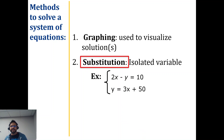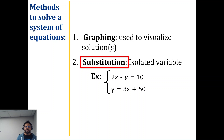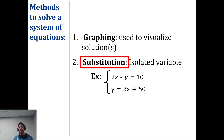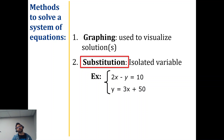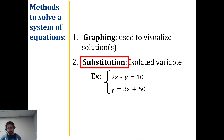Looking at this as an example — we're not going to solve it, just look at it quickly. If you notice, the second equation has the isolated variable; it says y equals. Commonly it is y equals, but sometimes it's x equals. And sometimes we have different variables than x and y. Regardless, we're going to go ahead and use our substitution method.